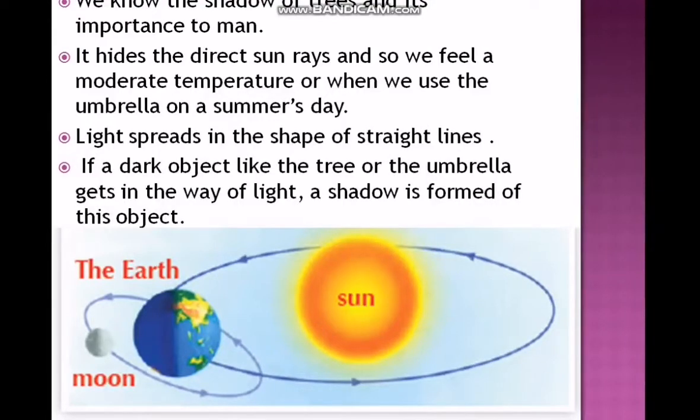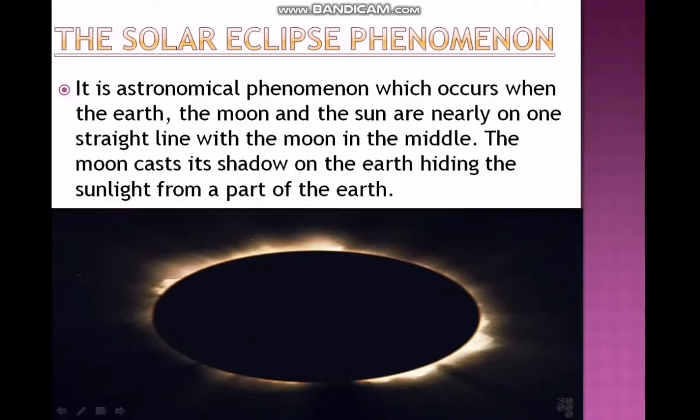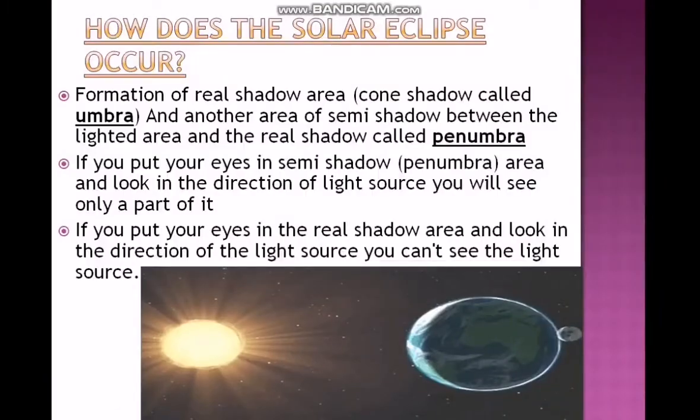So when the moon gets between the Sun and the Earth in one straight line, it hides the sunlight from reaching the Earth and forms a shadow. The solar eclipse is an astronomical phenomenon which occurs when the Earth, the moon, and the Sun are nearly in one straight line with the moon in the middle.